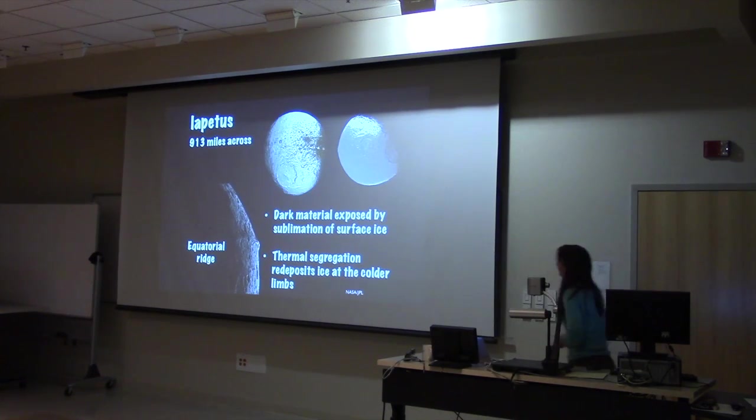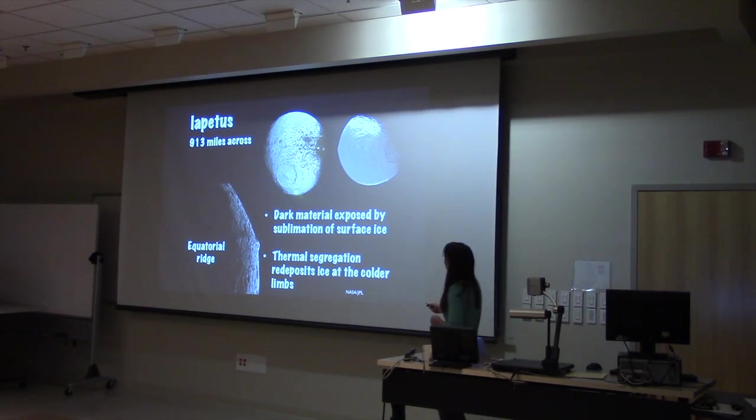And what that does is it causes them to change their trajectory a little bit, and they scatter or collide with the particles in other parts of the rings, and that clears out that part of the ring. And a lot of these other gaps you can see are caused by the same kind of thing. The next moon, Iapetus.